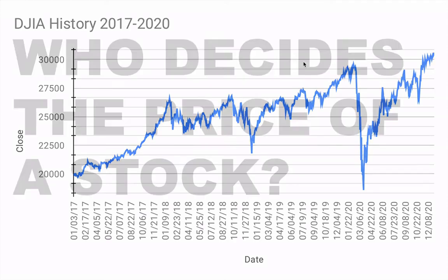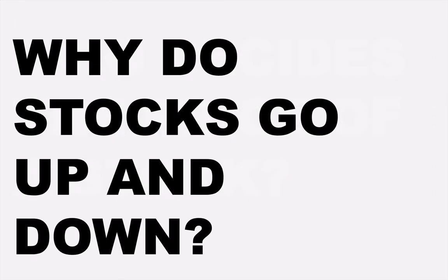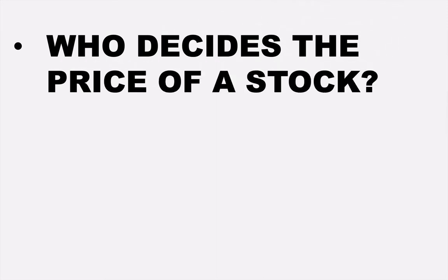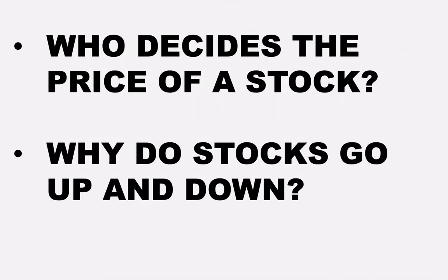Some questions I get about this are: who decides the price of a stock, and why do stocks go up and down? That's a little bit of what we'll talk about first before we look at cryptocurrency. I like these questions because they reflect how difficult it is to think about the stock market compared to the way we think about other things, like the prices of items in a store. Why do they go up and down? That's a really big and interesting question.